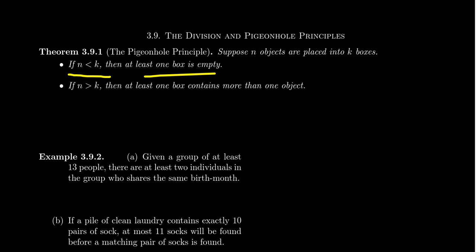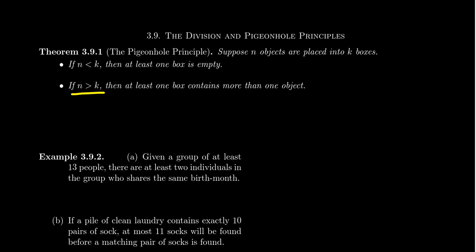We knew there were a lot of holes that were going to be empty — with 12 holes and four pigeons, we knew eight of the holes had to be empty. Conversely, if N is greater than K, then at least one box contains more than one object. If you have more pigeons than pigeonholes, there's got to be a hole with two pigeons in it. We had 13 pigeons with 12 holes, so there had to be a hole with two pigeons — there could be more than one, as some holes could still be empty.